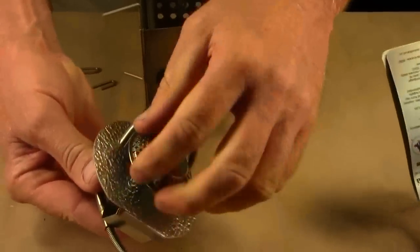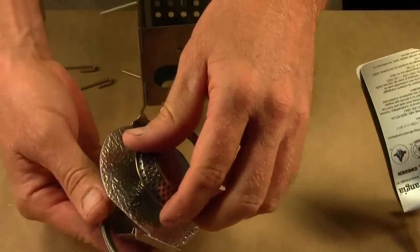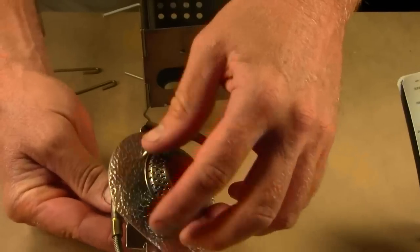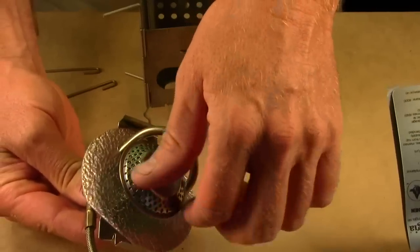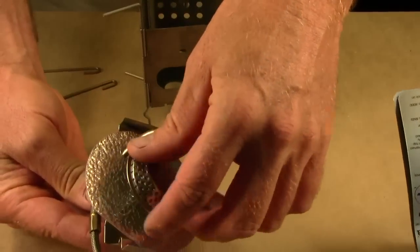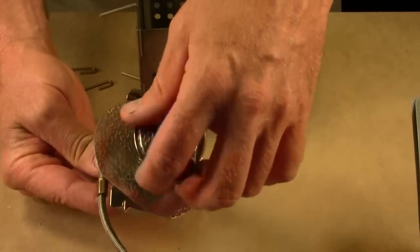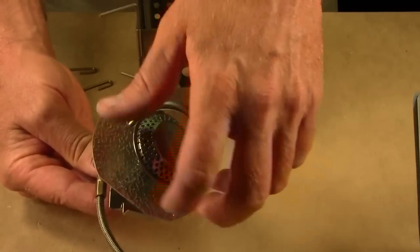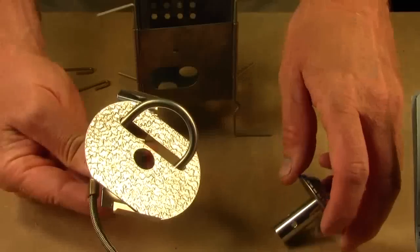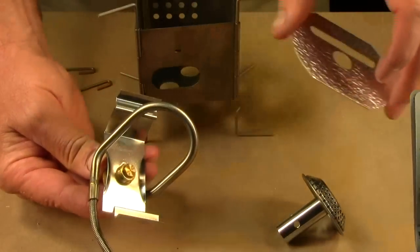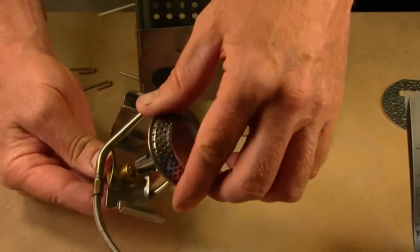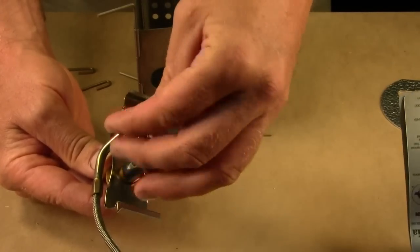You actually unscrew this burner head, just unthreads. So you unscrew the burner head, take it off, and then just remove that aluminum plate and then replace the burner head.